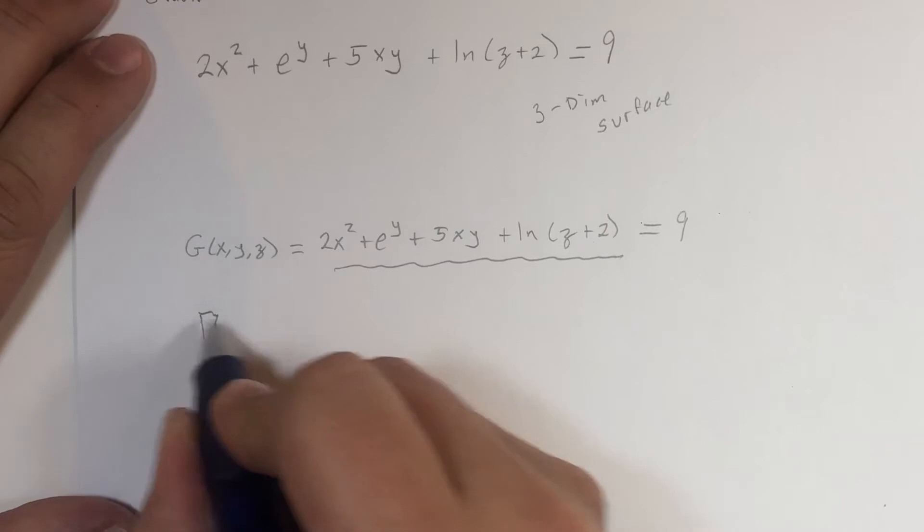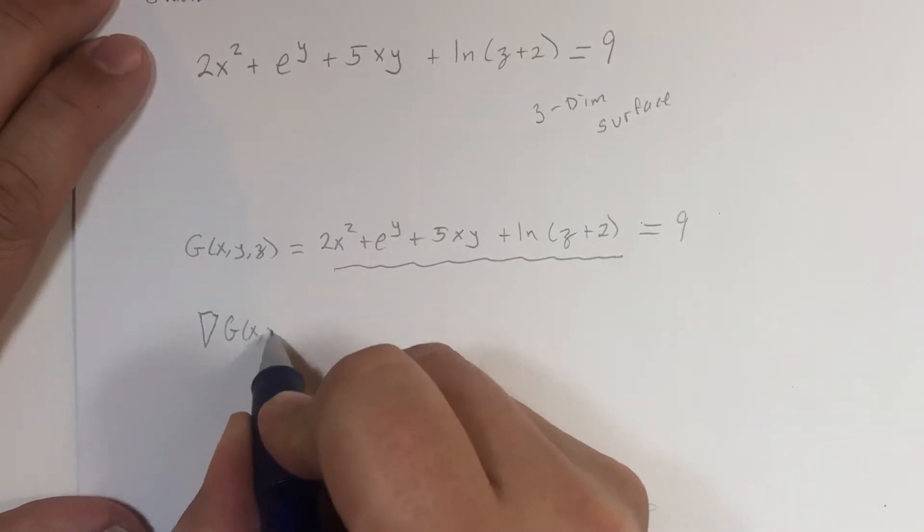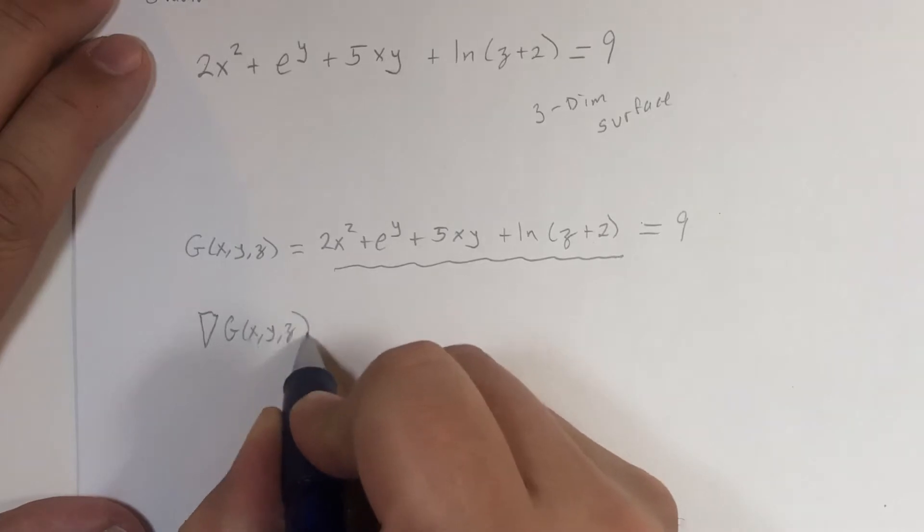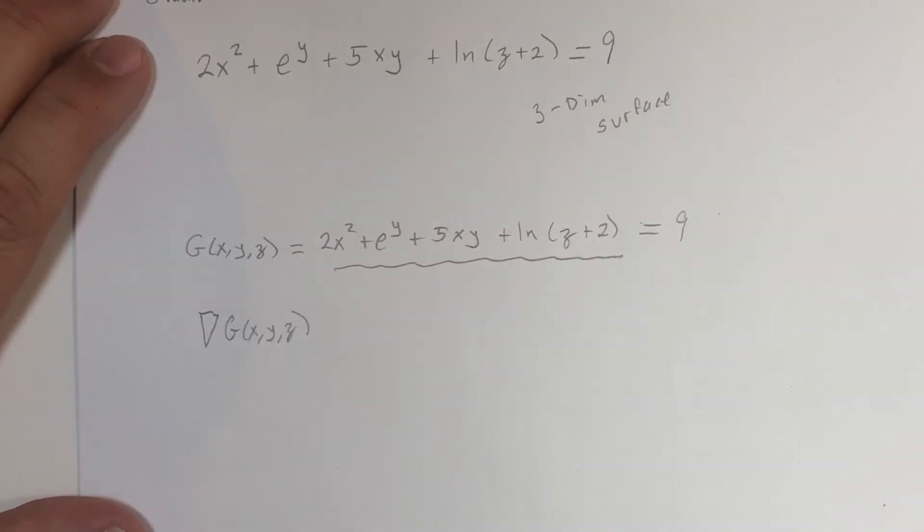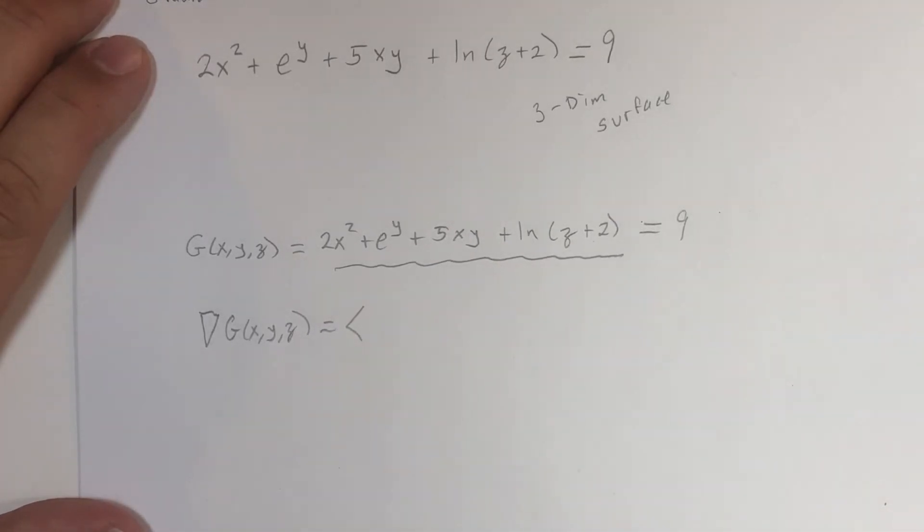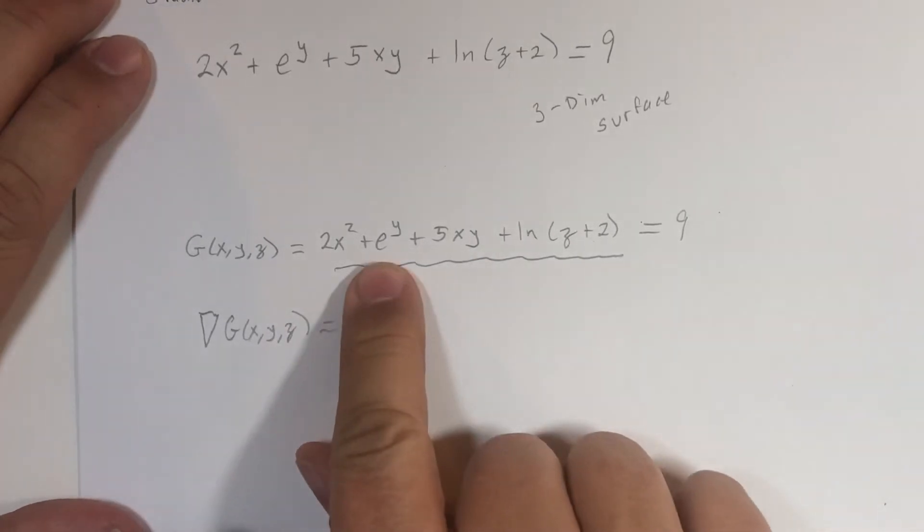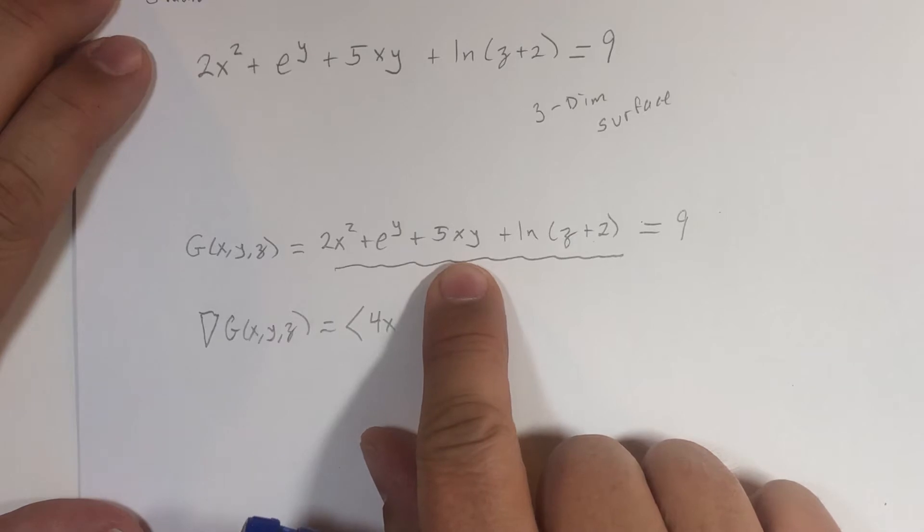Okay, so calculating the gradient doesn't necessarily mean we understand the concept, but let's do that calculation. We're going to take the three partial derivatives. The x partial derivative: we'll start off with 4x, then zero, and then, that's right, it would be 5y plus another term that's zero.